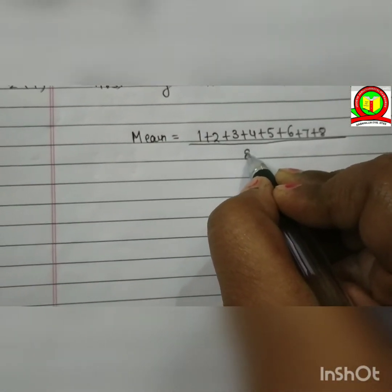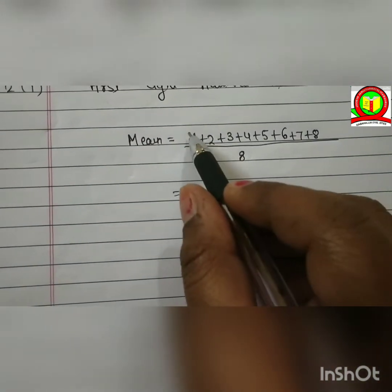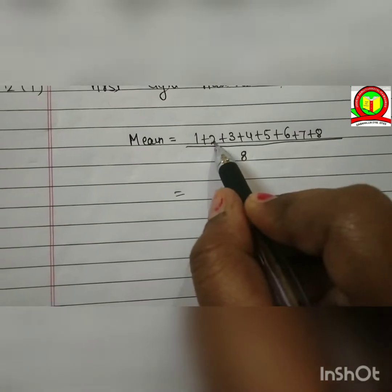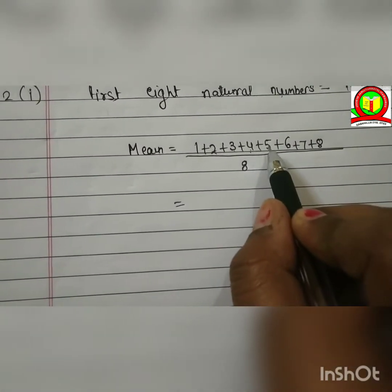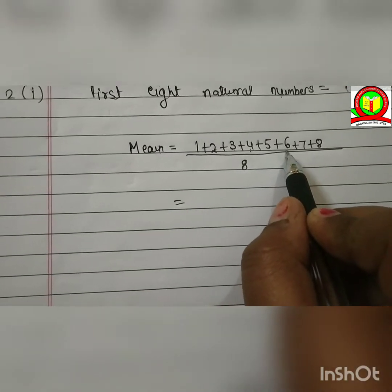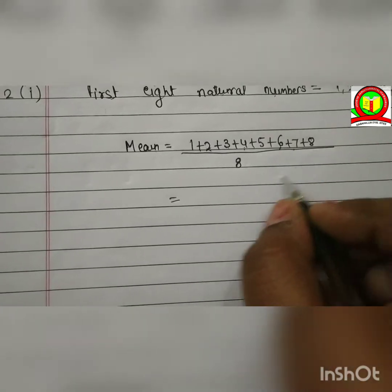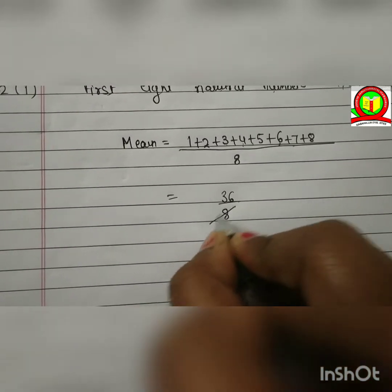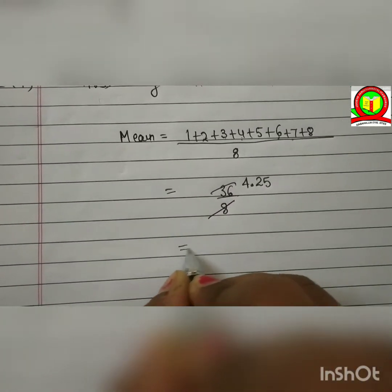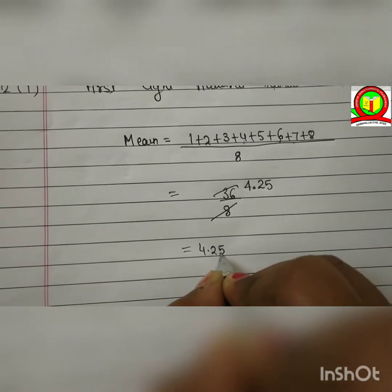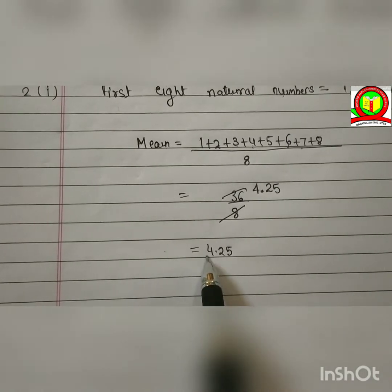Now, number of observation is 1, 2, 3, 4, 5, 6, 7, 8. 1 plus 2 is 3, 3 plus 3 is 6, 6 plus 4 is 10, 10 plus 5 is 15, 15 plus 6 is 21, 21 plus 7 is 28, and 28 plus 8 is 36. So, 36 divided by 8, the mean is 4.25.